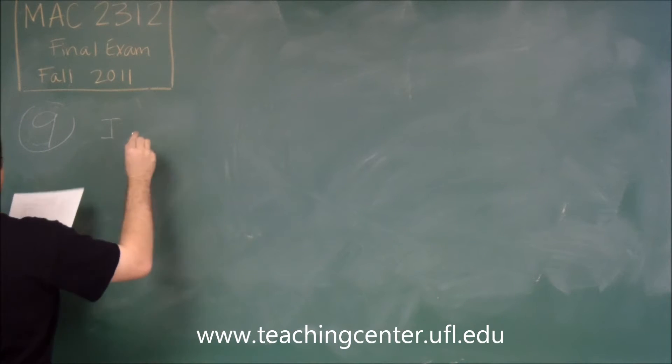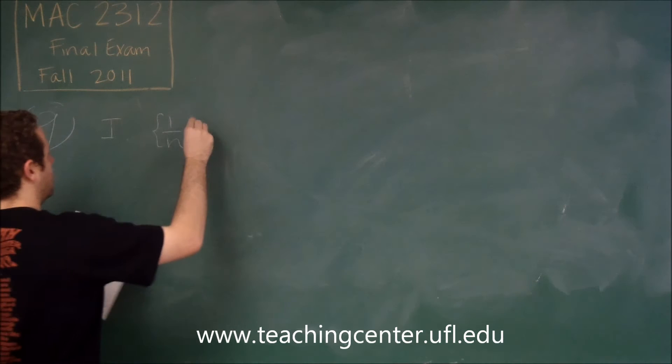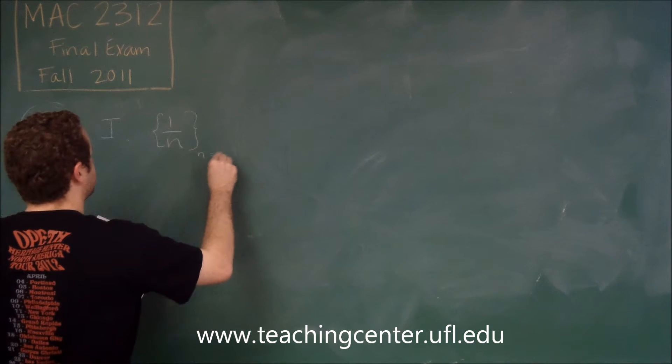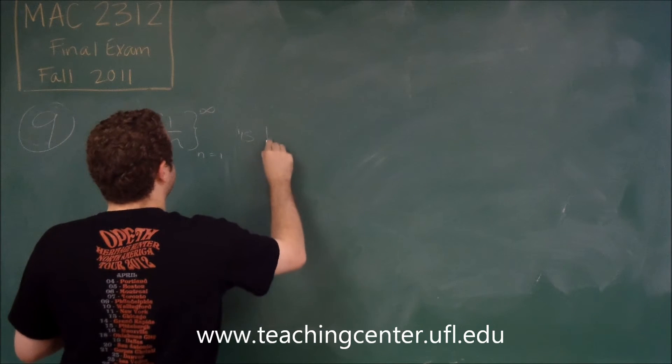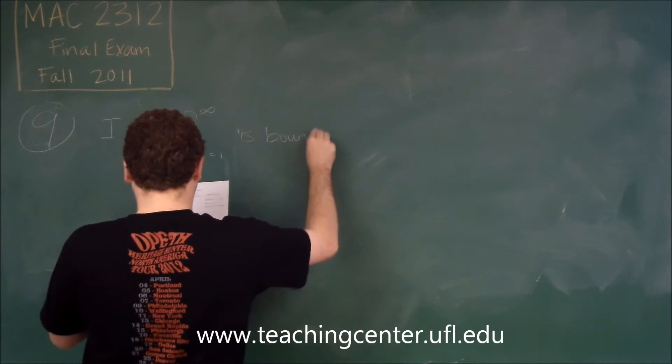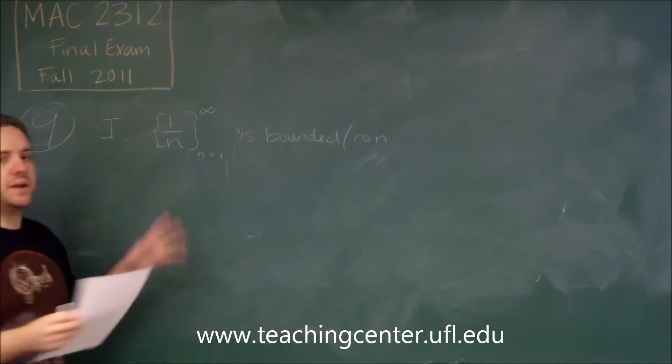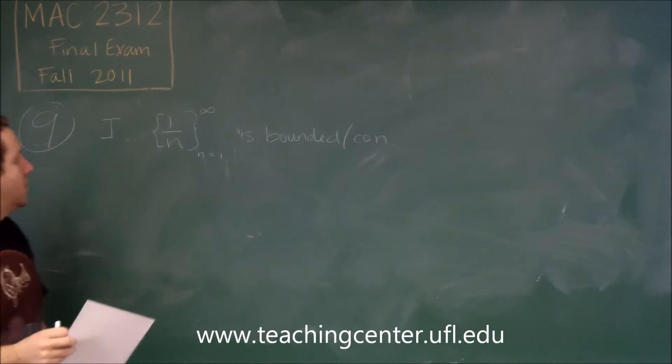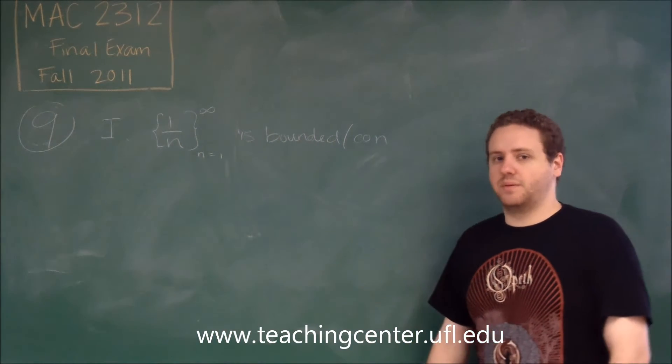Statement one, we have the sequence one over n from n equals one to infinity is bounded and convergent. I'm going to use some shorthand here for these. Remember these are sequences, not series, so we're not talking about the sums here.